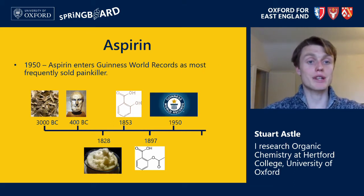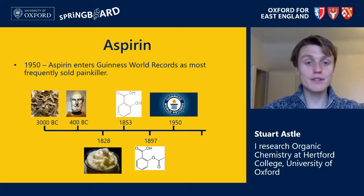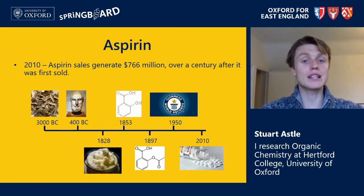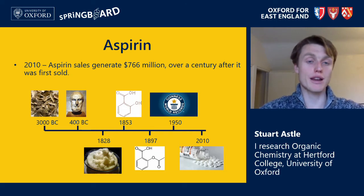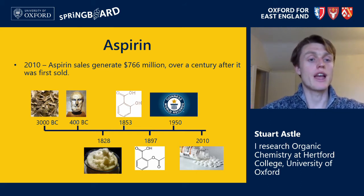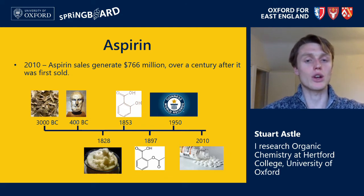By 1950, aspirin had entered the Guinness World Records as the most frequently sold painkiller. Even in 2010, aspirin sales were still generating over 750 million US dollars — over a century after it was first sold. This is quite an incredible story of how a natural chemical compound found in the bark of a willow tree was investigated and studied by chemists and developed into a drug grossing over three-quarters of a billion dollars a year.